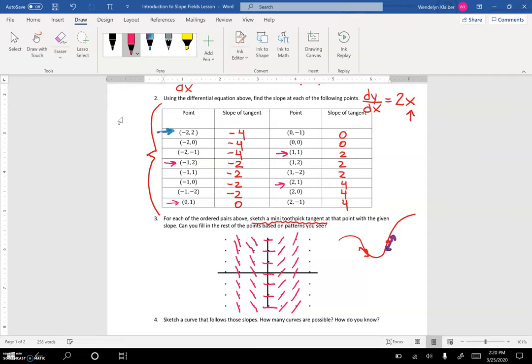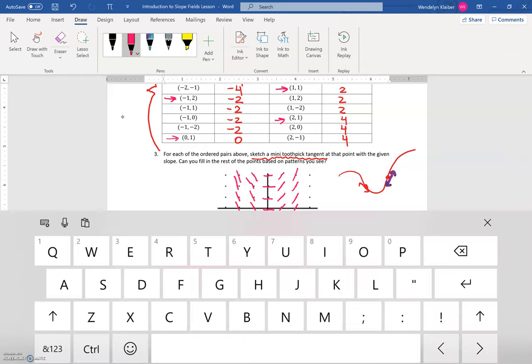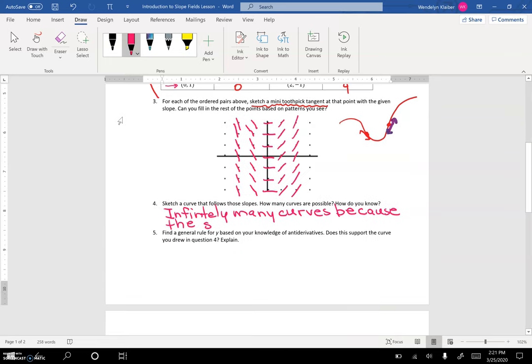If I continue and fill out the rest of this chart, I've graphed a slope field. You can see on the slope field, I actually have many different solutions. In fact, we have a family of solution curves. Number 4 asks: to sketch a curve that follows those slopes, how many curves are possible? Well, there are infinitely many curves possible because the same curve could be shifted up or down.